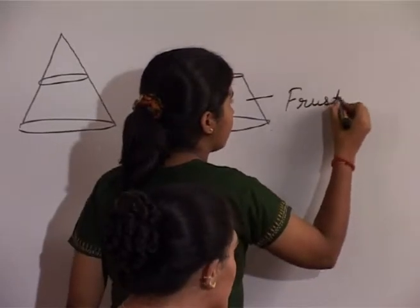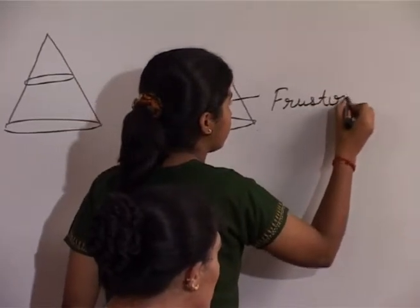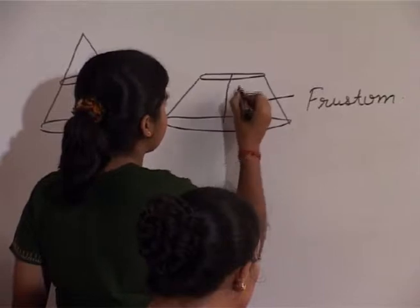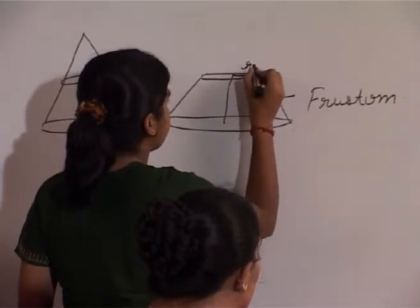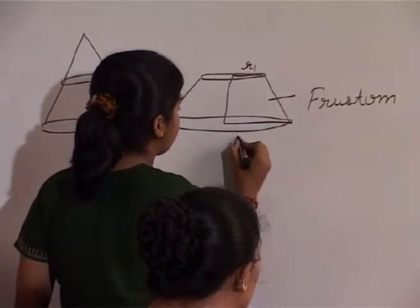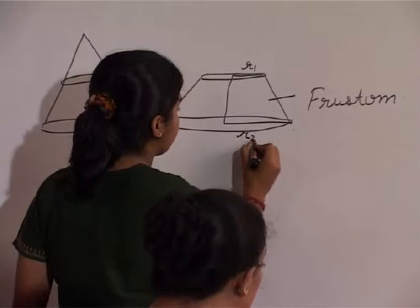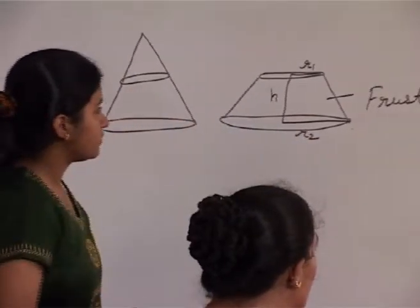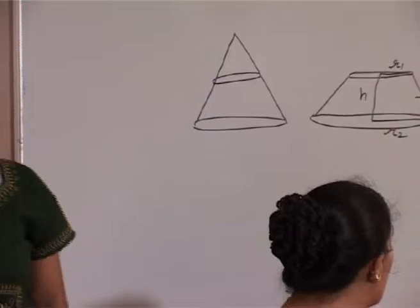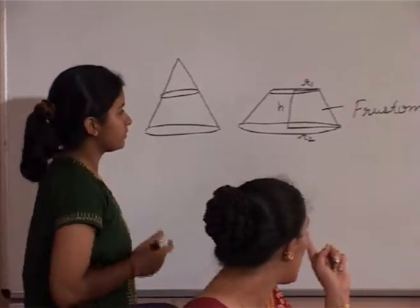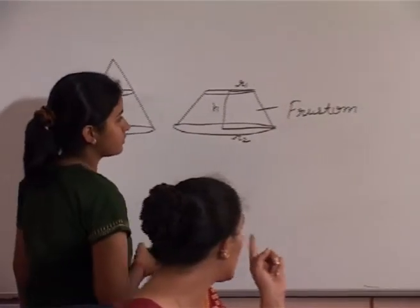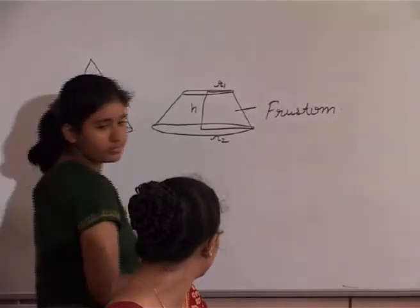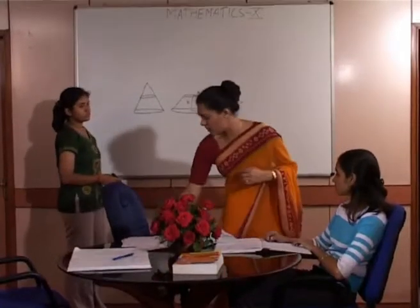Frustum is like a bucket — very good! Wonderful. And one thing: the spelling is correct — F, R, U, S, T, U, M. Okay, very good.